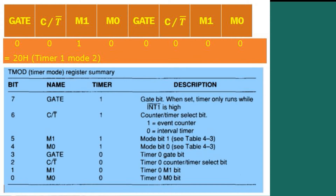The TMOD register is an 8-bit register. Bit 7 (GATE for Timer 1): when set, the timer only runs while INT1 bar is high. Bit 6 (T/T bar): counter/timer select — 0 for timer, 1 for counter. Bits 5 and 4 are M1 and M0 for mode selection of Timer 1. Bits 3–0 serve the same functions for Timer 0.